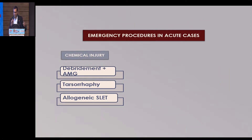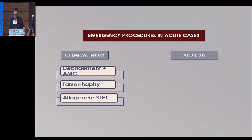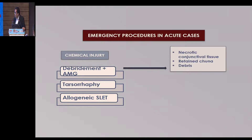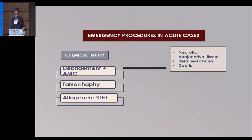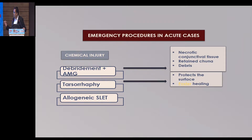Starting with chemical injuries — as far as the surgical part is concerned, the most important steps are debridement and AMG, tarsorrhaphy, and allogenic slate. Debridement is critical: we must remove all necrotic conjunctival tissue, retained lime (chuna), and debris, because these cause recurrent inflammation. Then apply amniotic membrane graft on all raw areas. Tarsorrhaphy is probably the most important step — even if you don't do anything else, just remove the chuna and do a nice tarsorrhaphy and it will heal. Without tarsorrhaphy, severe chemical burns probably won't heal even with AMG.